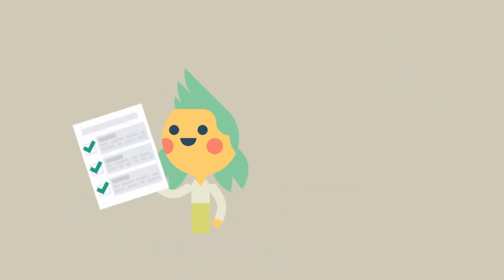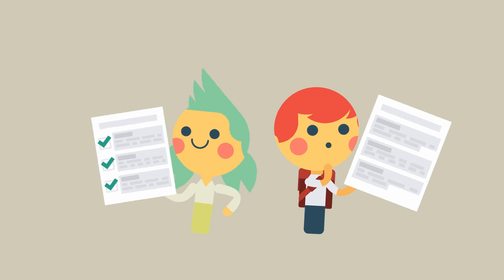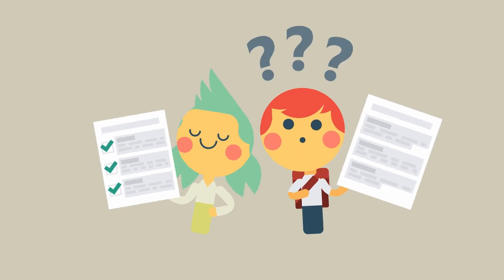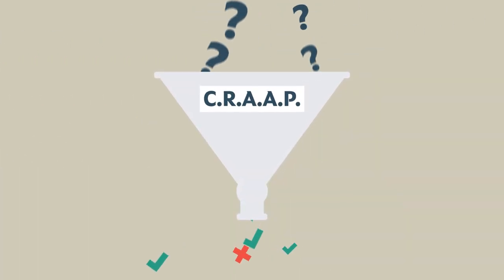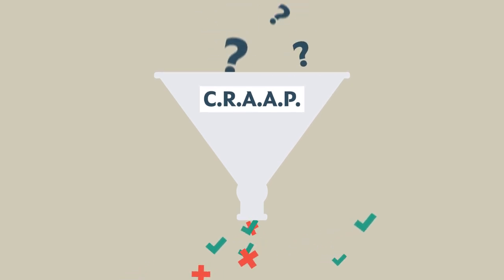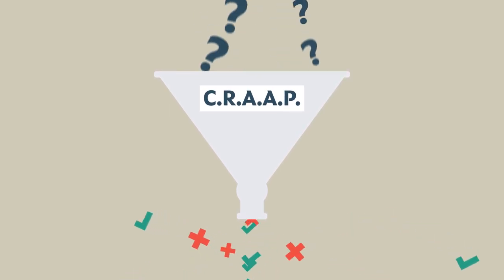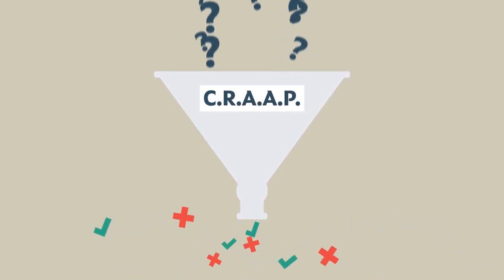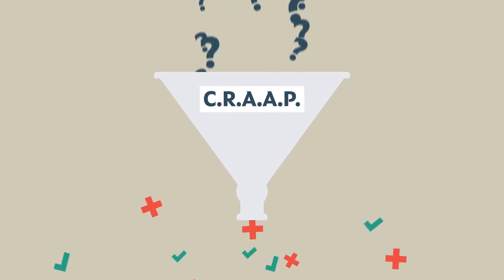So how can you be confident that you are selecting the best resources to answer your task? One technique you can use is the CRAP test. The CRAP test is a list of questions to help you decide whether or not the information you find is credible and appropriate to use.